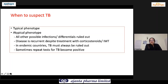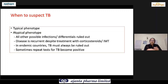When should you suspect TB with atypical phenotype? First, when you have ruled out all other possible infections. Second, when treating with corticosteroids and immunosuppression but the disease is recurring — something is not right and it could be underlying TB. In countries like ours, we need to rule out TB because the disease has protean manifestations. Tests that were negative may become positive when repeated after one year, which may be an important clue.